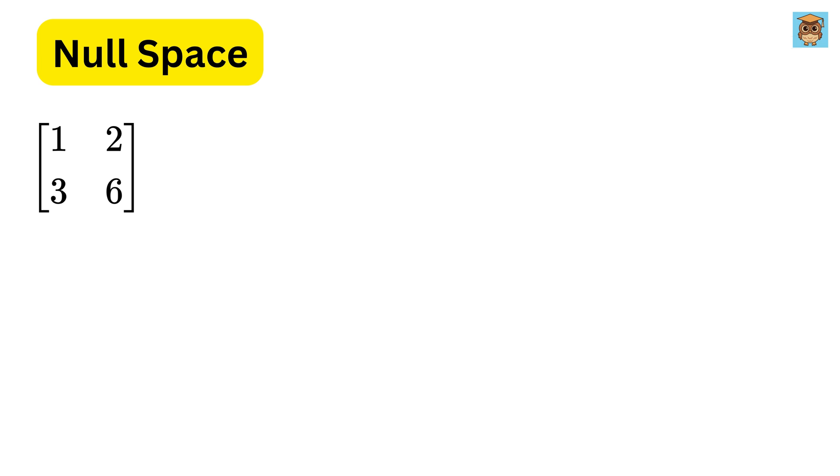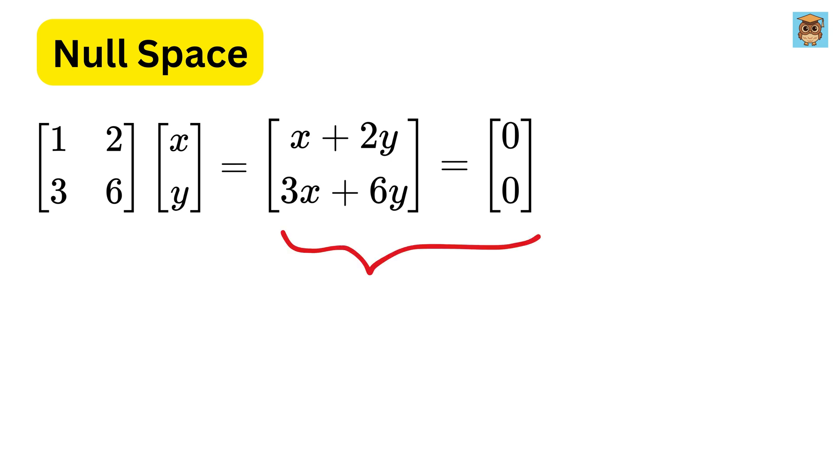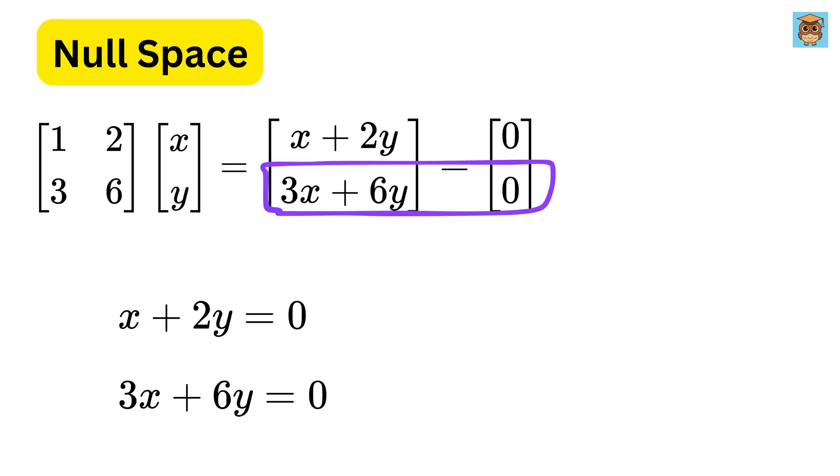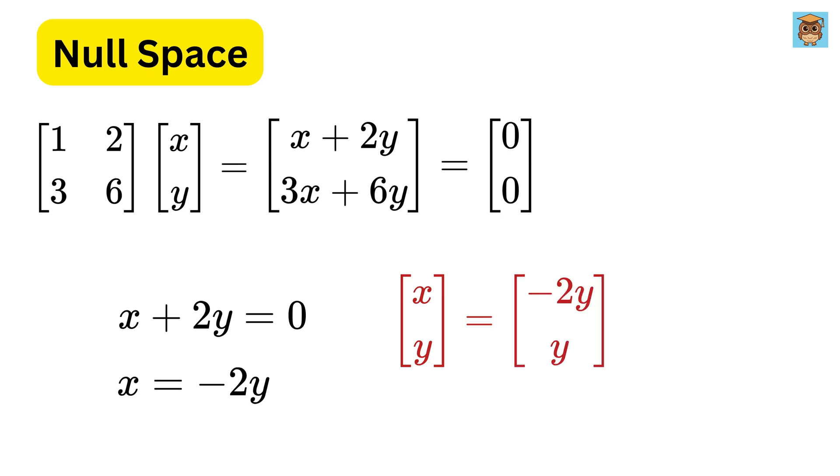For example, consider this matrix A again. When we multiply any input vector with it, we get this vector, but we need 0, 0 vector, and thus we equate this thing to 0, 0 to get this equation as 0, and this one also as 0. But the second equation is just three times the first one. Thus, we only get x equals minus 2y. So, we can write input vector x and y as minus 2y and y, and by taking y to common, we get y times minus 2, 1. That's it.